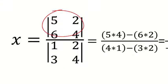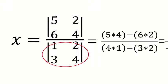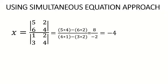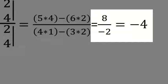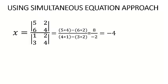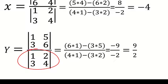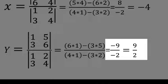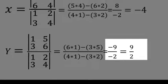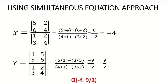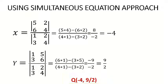Simplifying: X = (5×4 − 2×6) / (1×4 − 2×3) = (20 − 12) / (4 − 6) = 8 / (−2) = −4. For Y: determinant [1, 5; 3, 6] over original determinant [1, 2; 3, 4], giving Y = (1×6 − 5×3) / (−2) = (6 − 15) / (−2) = (−9) / (−2) = 9/2. Therefore the point Q is (−4, 9/2). Thank you very much.